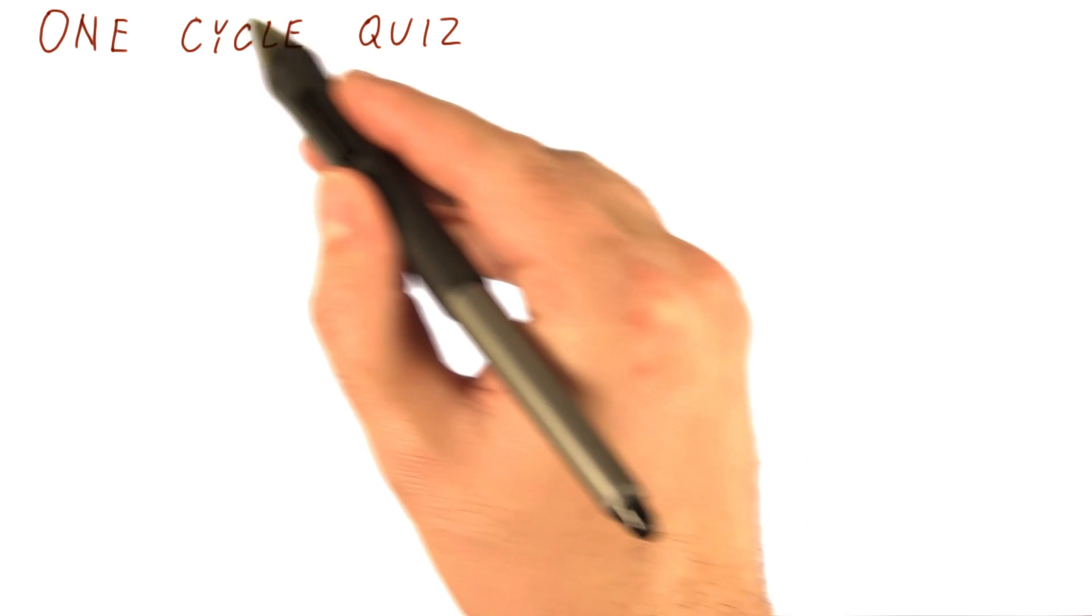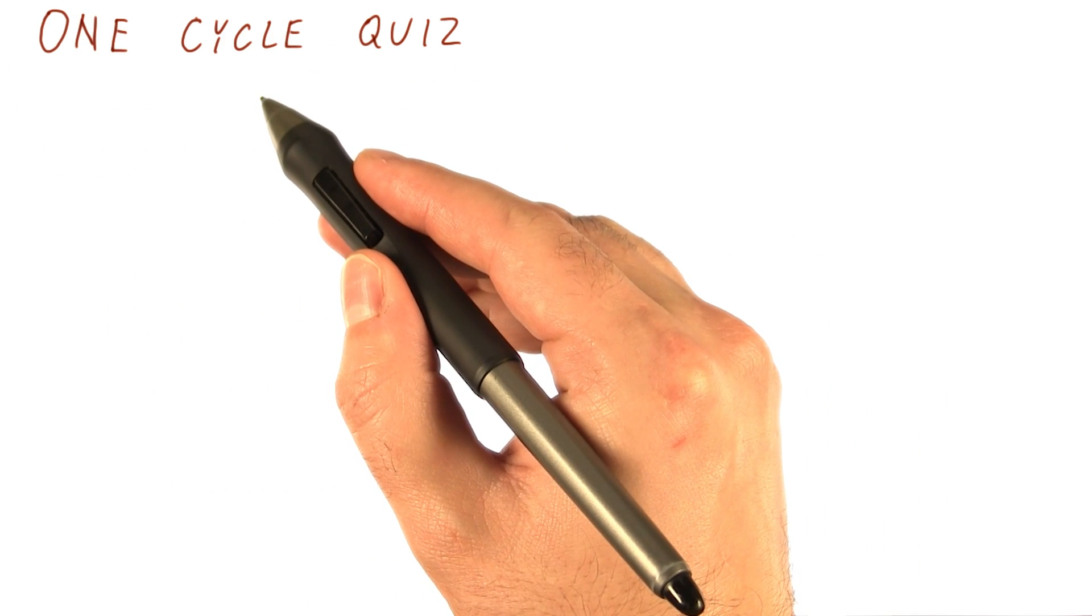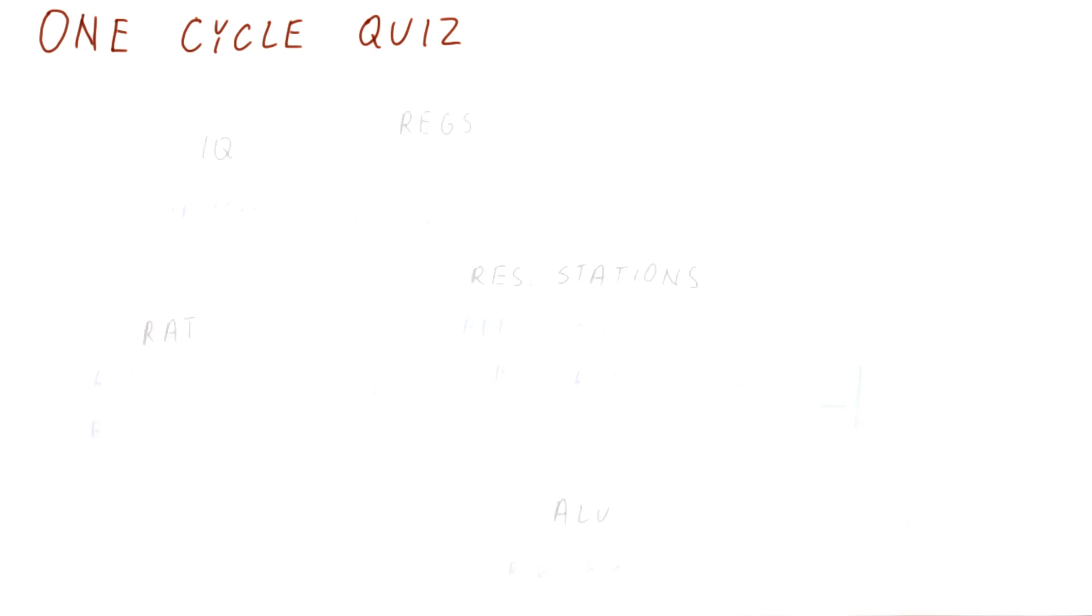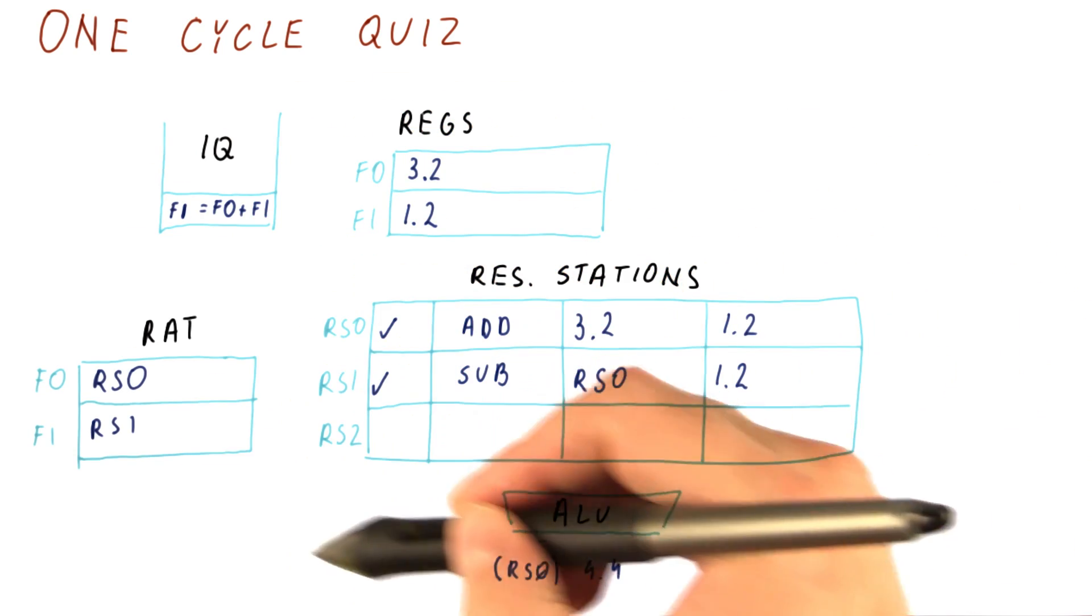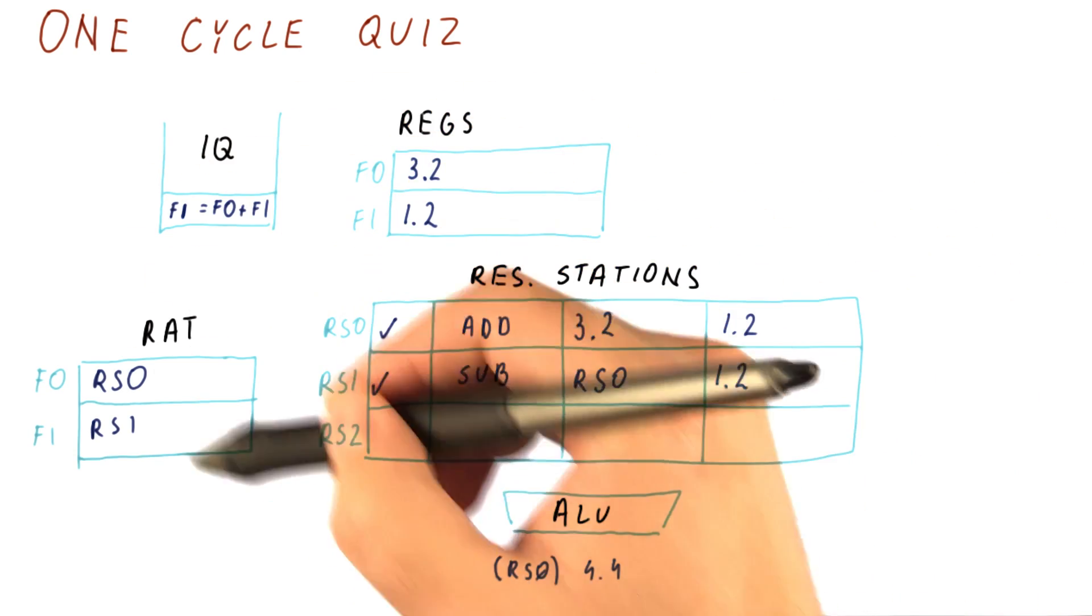So now let's see if we understood what are all the things that happen in one cycle in Tomasulo's algorithm. Suppose that this is the situation we have at the beginning of a cycle.